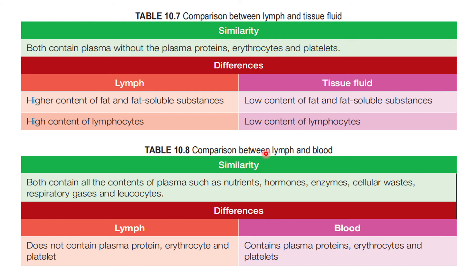Now let's look at the similarity between lymph and blood. Both contain plasma, nutrients, hormones, enzymes, cellular waste, respiratory gases, and leukocytes. The difference is that lymph does not contain plasma proteins, erythrocytes, or platelets, because of their large size — they fail to diffuse out of the blood capillary. Blood, however, contains plasma proteins, erythrocytes, and platelets as part of its components.